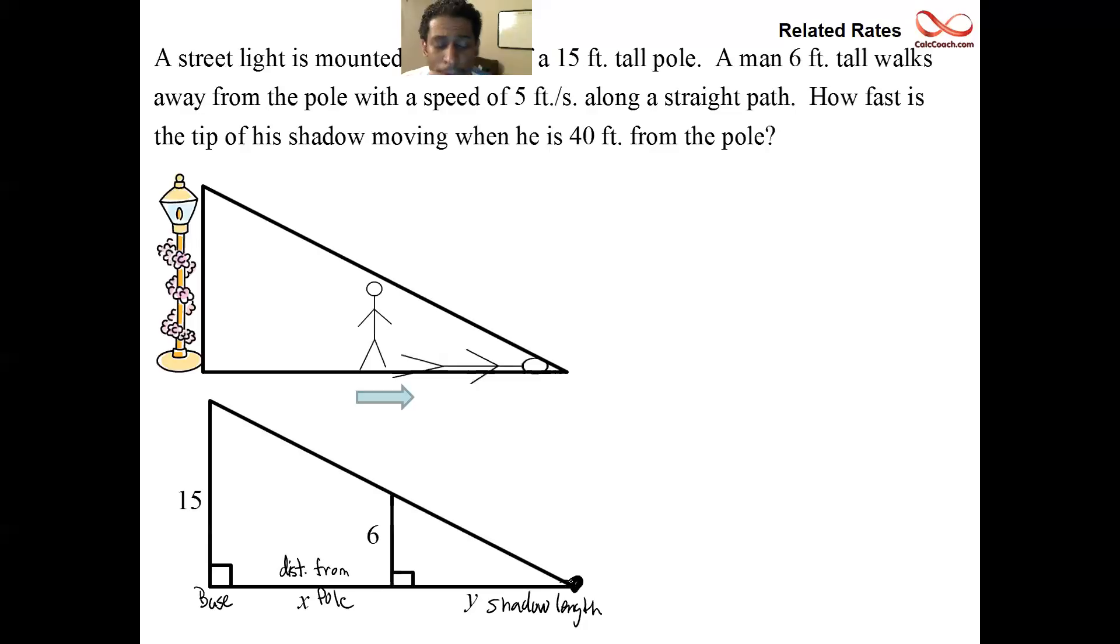And so we need to somehow relate these variables to each other. Now normally we use Pythagorean theorem, X squared plus Y squared equals Z squared with right triangles. But the beam of light, how long the hypotenuse is, doesn't play a role here. And so it's a little bit deeper than that. And to go back to geometry class, where we have two triangles that are similar.